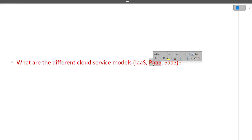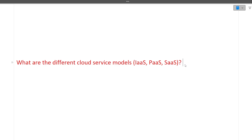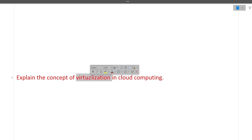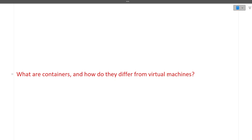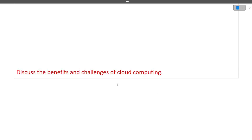The next questions are about cloud computing — different cloud service models: Infrastructure as a Service, Platform as a Service, and Software as a Service. This was asked because the candidate had mentioned AWS in their resume. The next question was: explain the concept of virtualization in cloud computing. And the second-last question was: what are containers and how do they differ from virtual machines? Containers, used through Docker, differ from virtual machines primarily in how the operating system is configured — containers are more efficient than virtual machines.